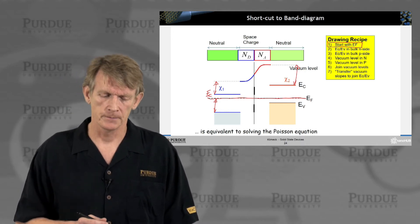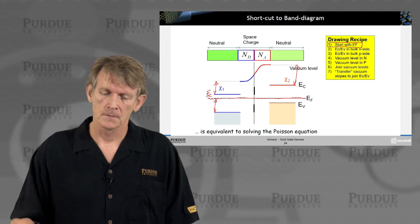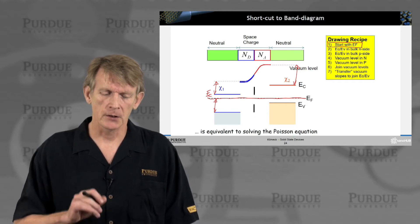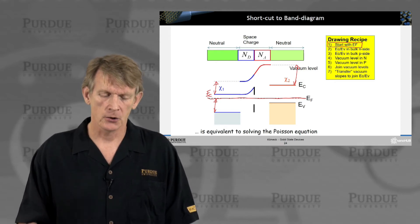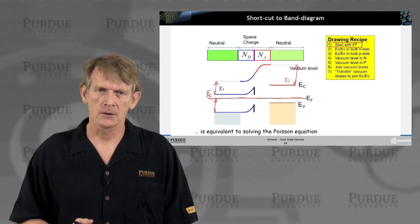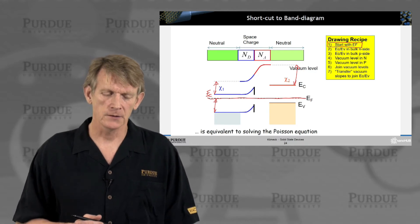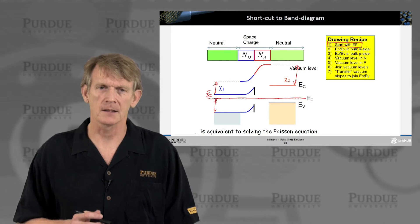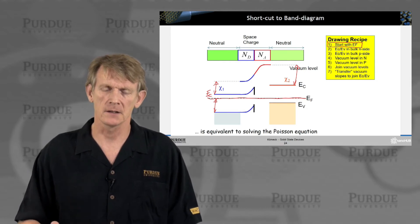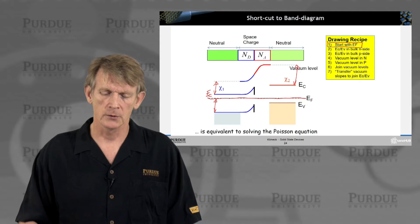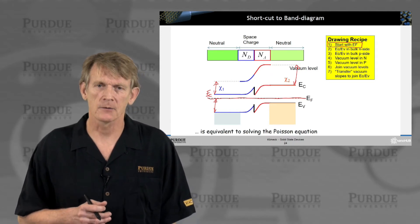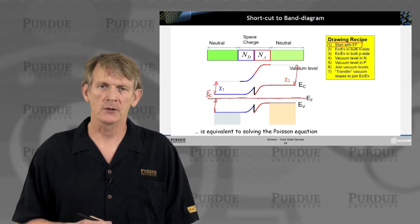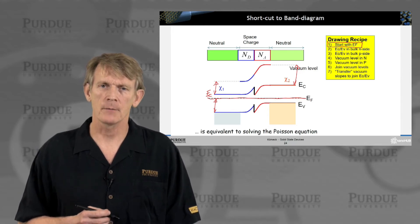And now what we do is we join the vacuum levels by a constant line, by some smooth shape. And then we forget about this junction a little bit and we transfer down the curved shape from the vacuum level down into the conduction band.